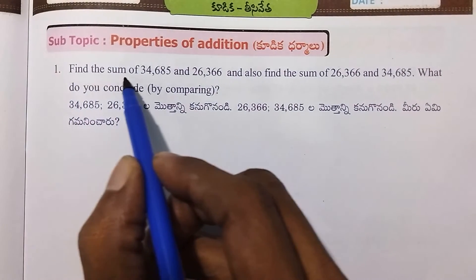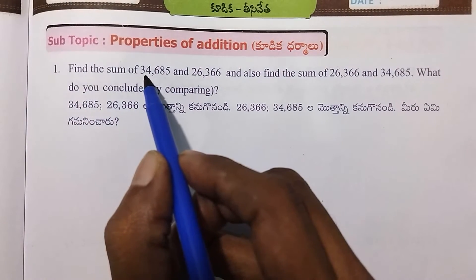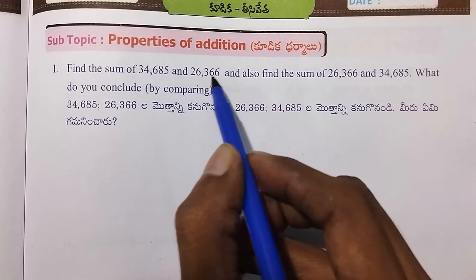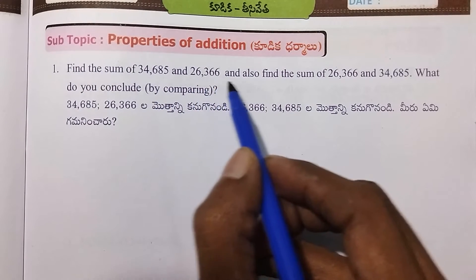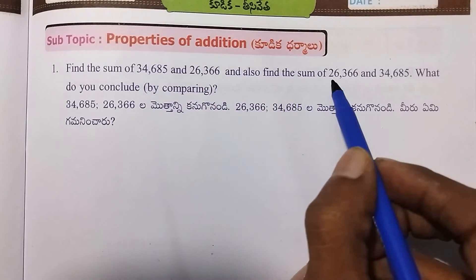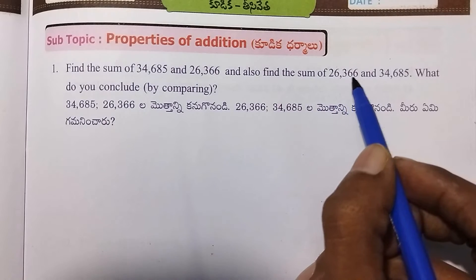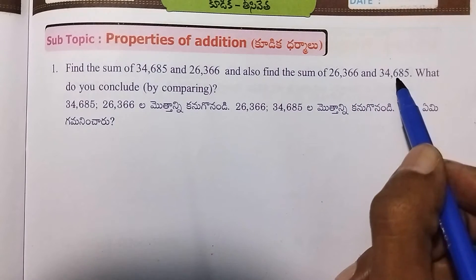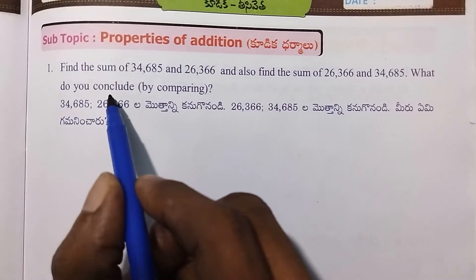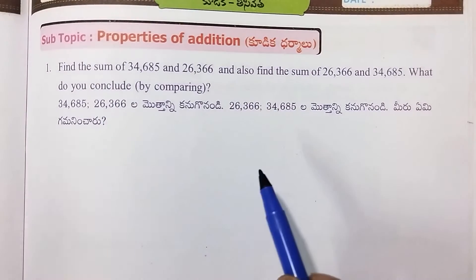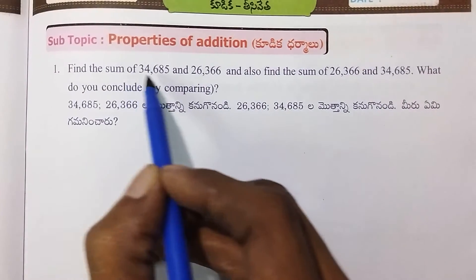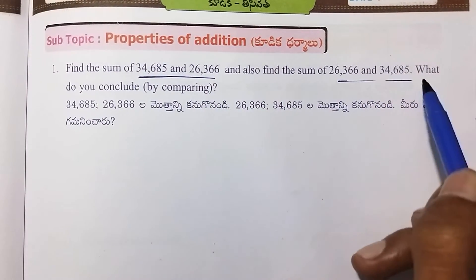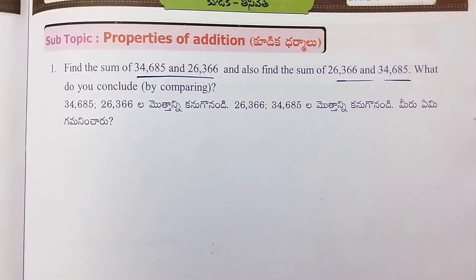Find the sum of 34,685 and 26,366. And also find the sum of 26,366 and 34,685. What do you conclude?